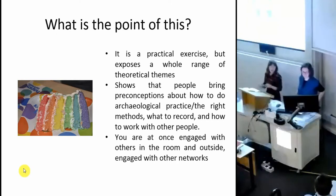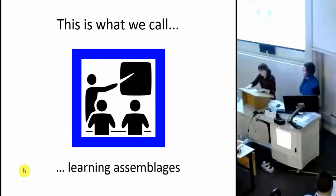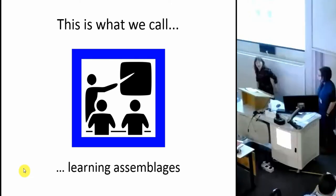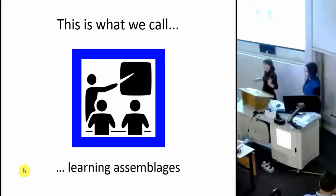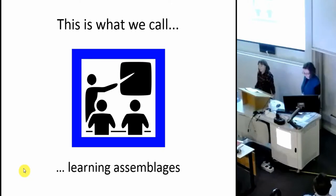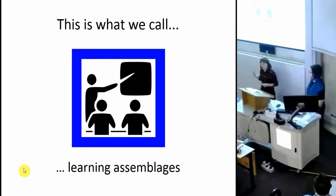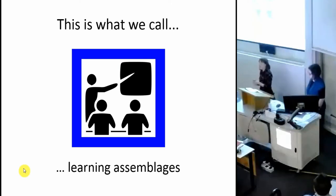This is what we like to call learning assemblages — a phrase that Karina and I coined. Traditional modes of teaching and learning are often known as banking models, with a lecturer imparting knowledge to a passive, absorbing audience. This has been critiqued by critical pedagogy and things such as the flipped classroom. We want to take this one step further by thinking about the wider assemblages of which we're part, including the way that materials impact on the learning process.